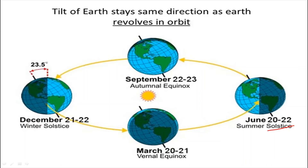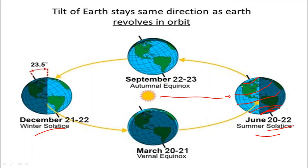Now let's come to equinoxes and solstices. A solstice is that time of the year when the sun's vertical rays fall over one of the two tropics. Looking at the situation of June 21st: the North Pole, Tropic of Cancer, equator, Tropic of Capricorn, and South Pole. The sun's vertical rays fall directly on the Tropic of Cancer, meaning more heat in the northern hemisphere because the northern hemisphere is tilted towards the sun.